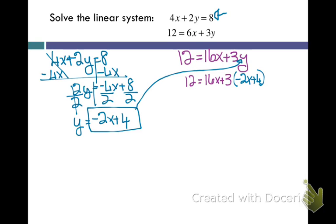Now I'm going to solve this by distributing. I don't know why I'm writing 16x; it's 6x. So let me fix that real quick before I go forward. Okay, so I have 12 equals, I'm going to go ahead and write down my 6x.